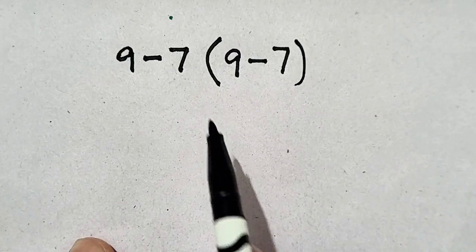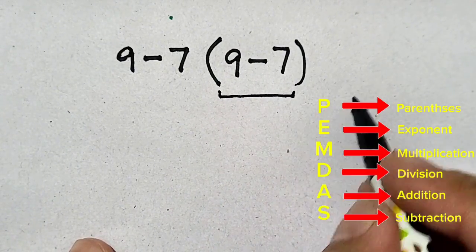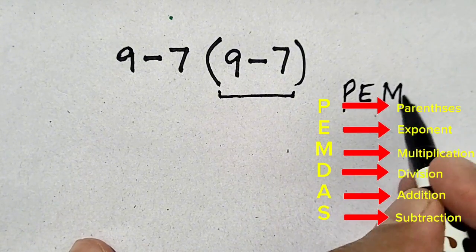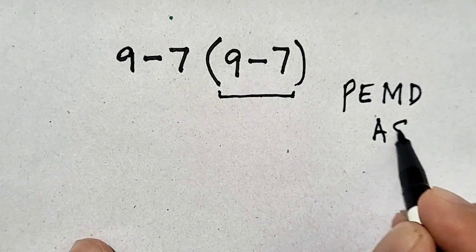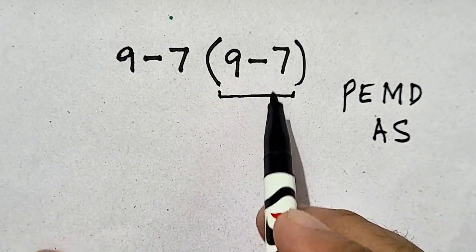According to PEMDAS rule, first of all, we address parenthesis, then exponent, then multiplication and division, and finally addition and subtraction. So, first of all, parenthesis.